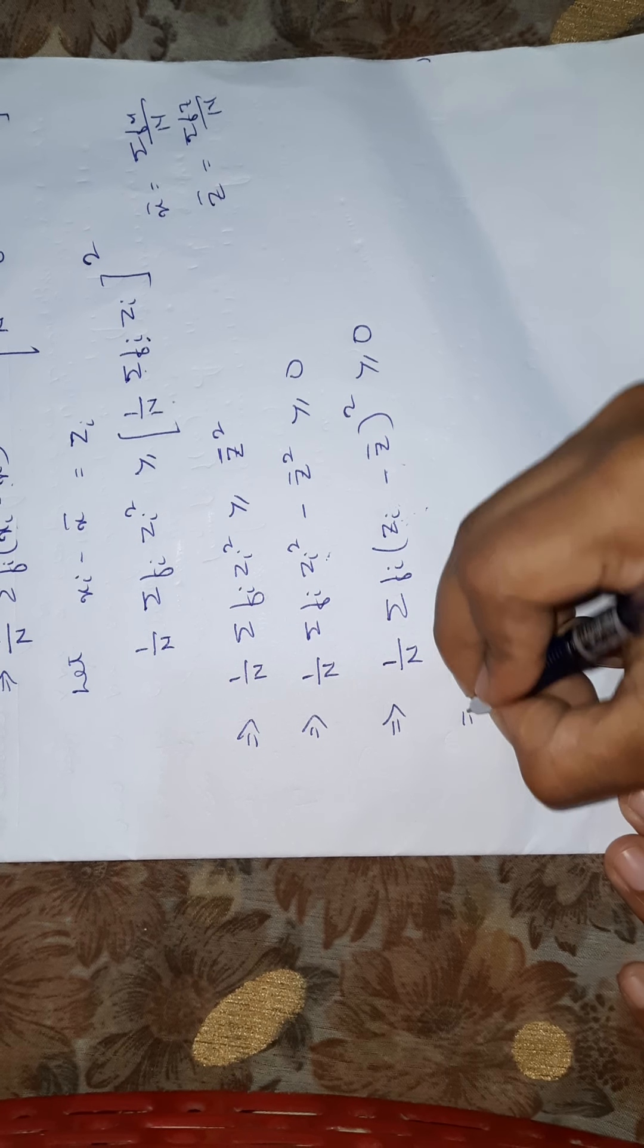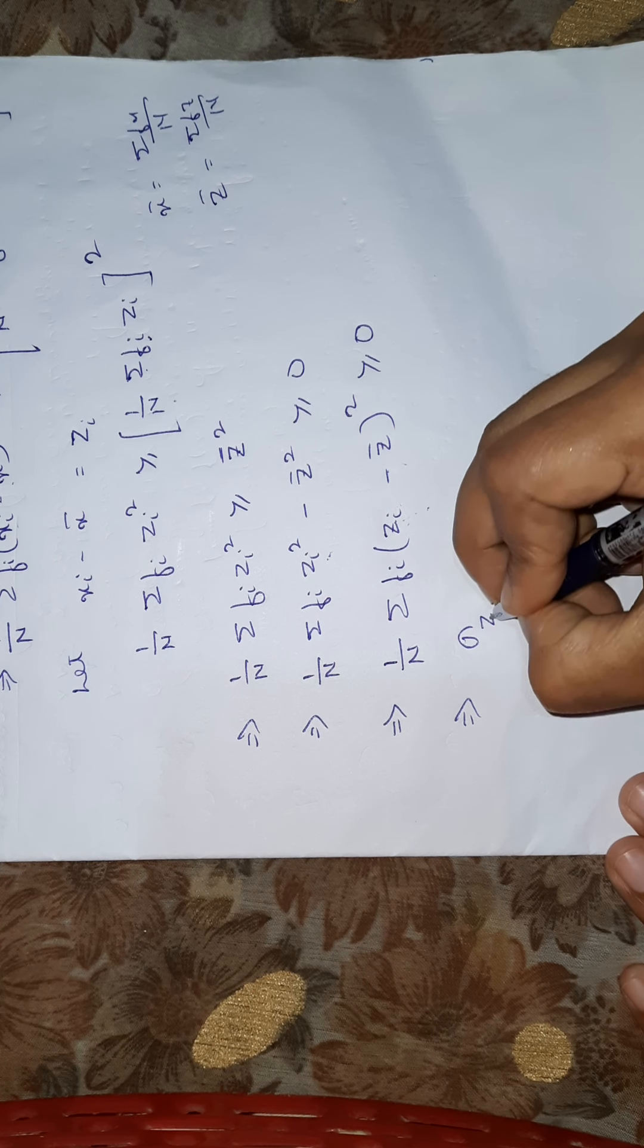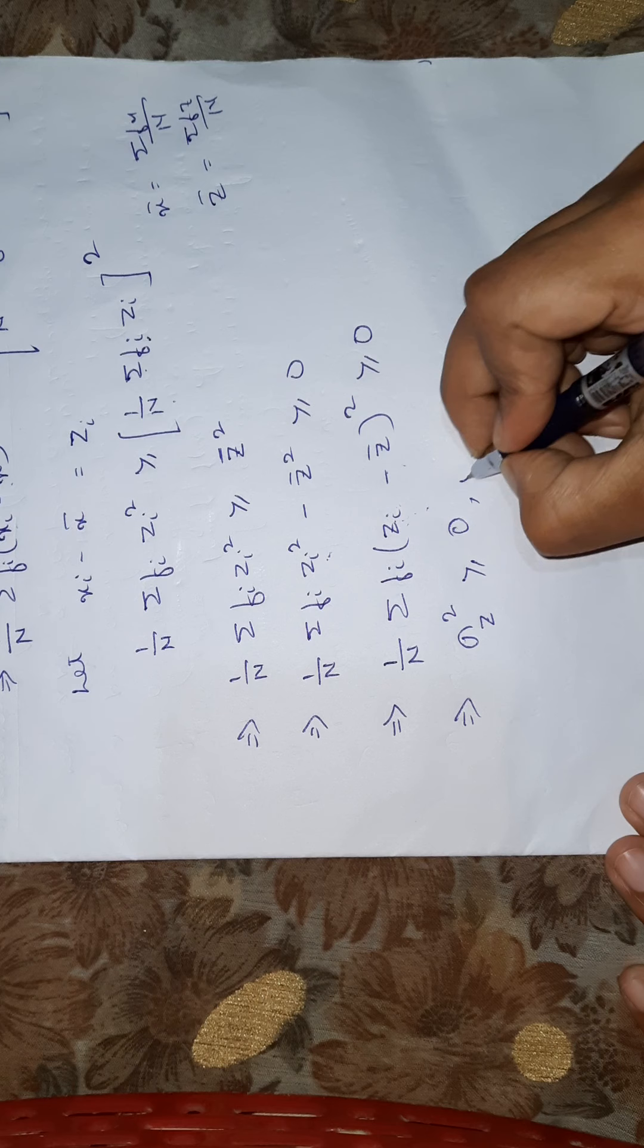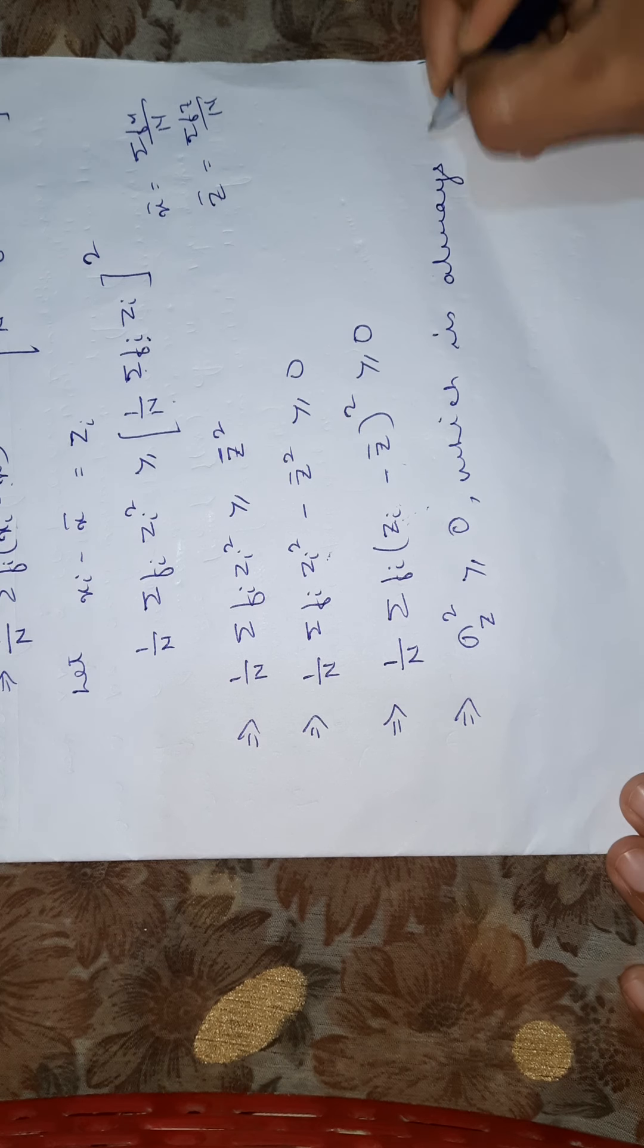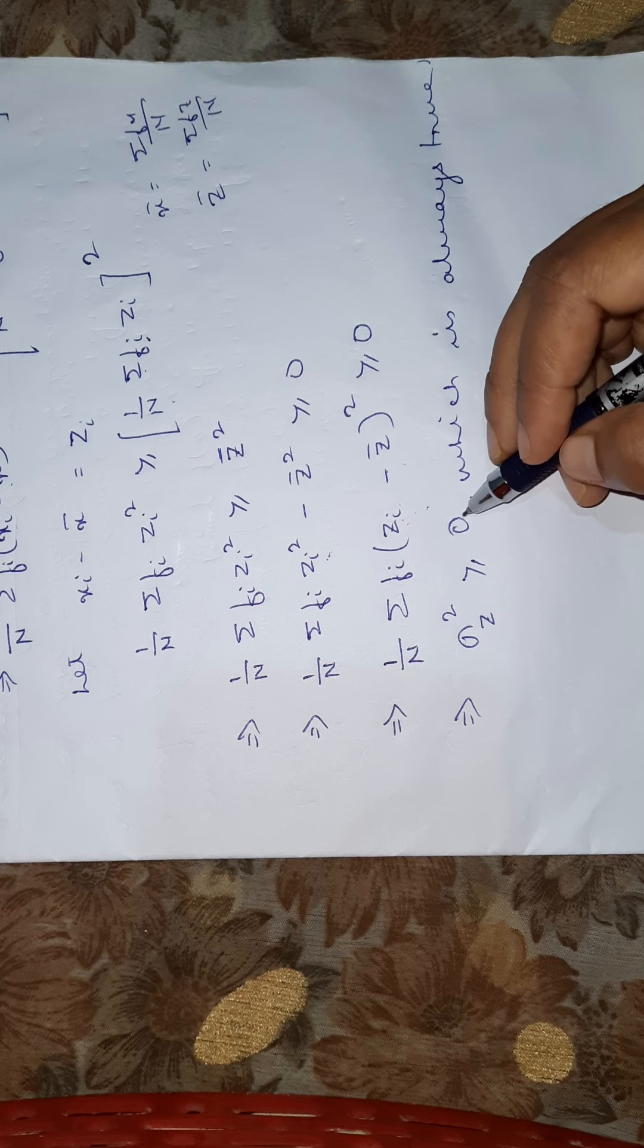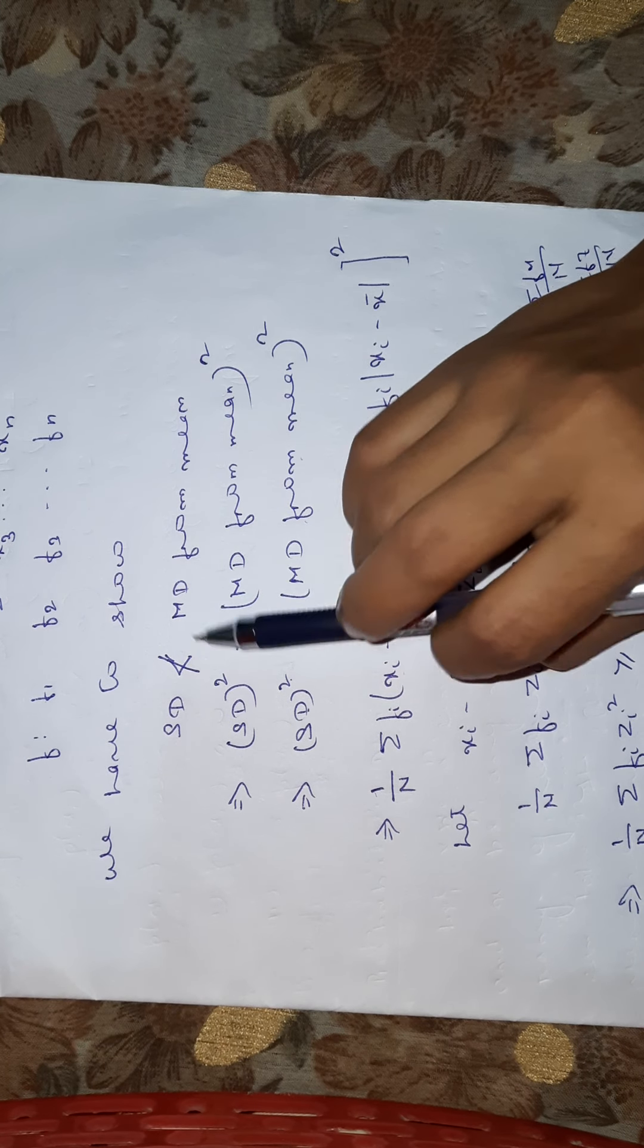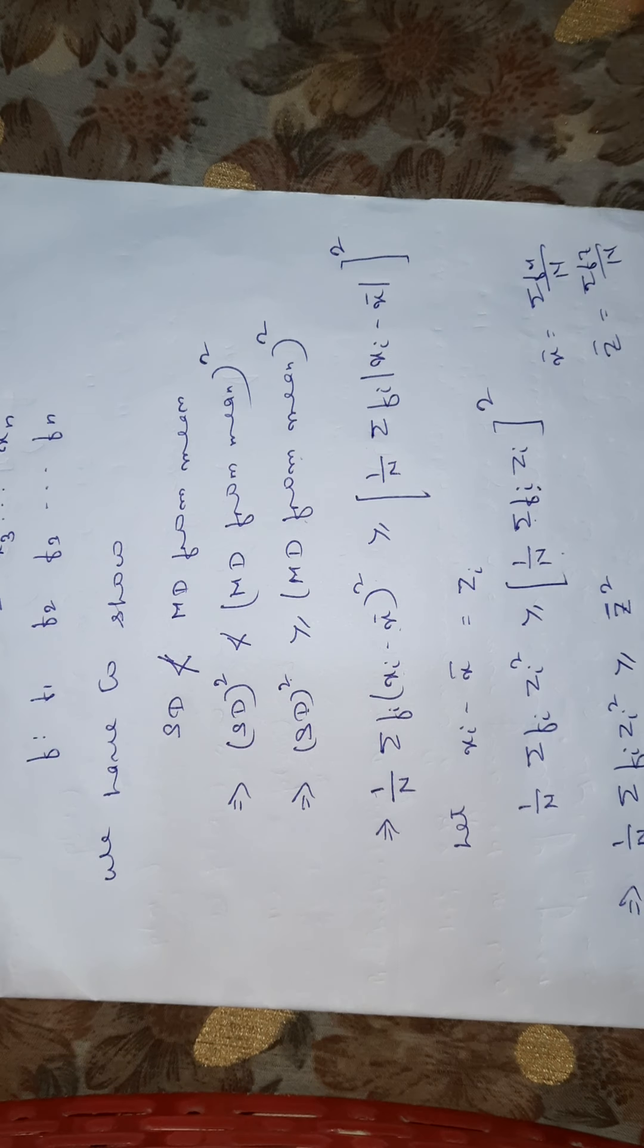So this is the formula for standard deviation in terms of z: sigma z squared, which is greater than or equal to zero. This is always true since it is a square term. If this statement is true, then our assumption that standard deviation is not less than mean deviation from mean is also true. Hence our proof is complete.